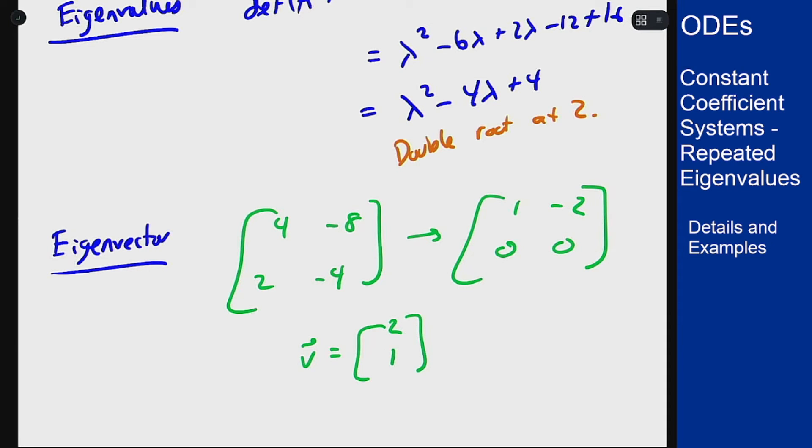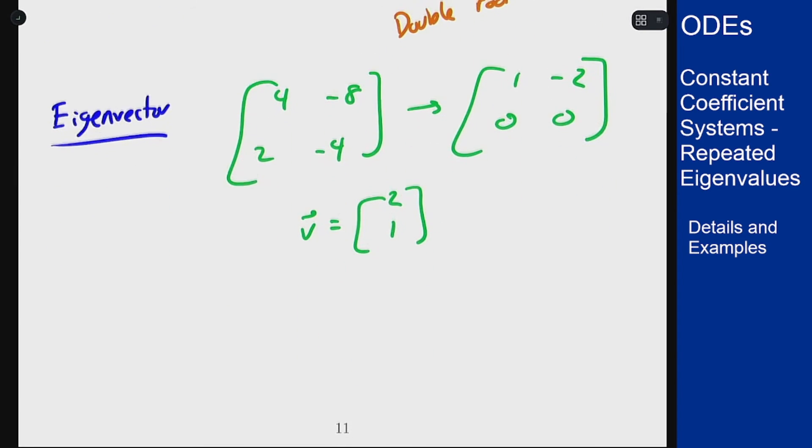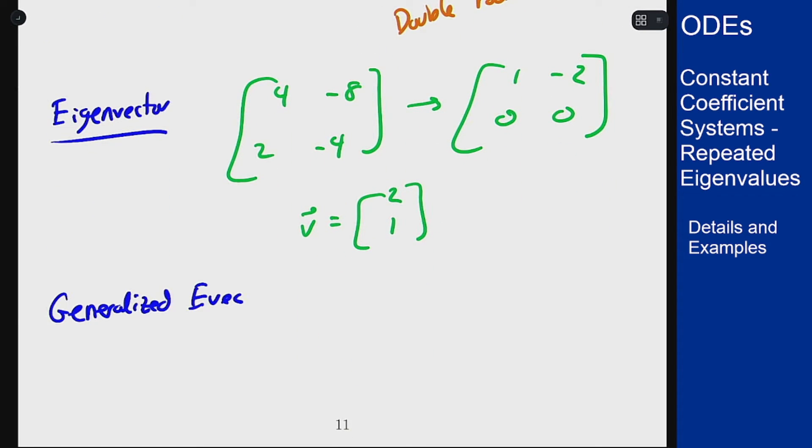Now since I only get one eigenvector, I know I'm going to need a generalized eigenvector for the general solution. Let's just do that right now—we already have this equation put together, so I can then look for the generalized eigenvector. We can take the same answer we had before, after we subtracted lambda I: [4, -8; 2, -4], and tack on the [2; 1] that is the eigenvector, and then solve this out.